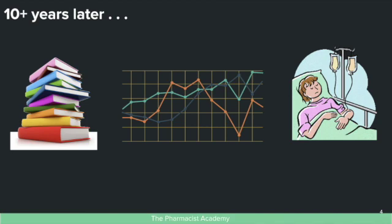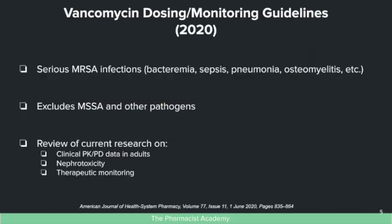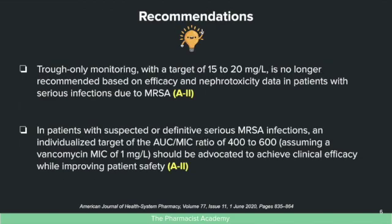Since those guidelines came out, there's been more experience with vancomycin and several publications on therapeutic monitoring and dosing, leading to the 2020 guideline. The 2020 guidelines, similar to 2009, focus on serious MRSA infections such as bacteremia, sepsis, and pneumonia, and exclude MSSA and other pathogens. They reviewed clinical pharmacokinetic and pharmacodynamic data, as well as nephrotoxicity and therapeutic monitoring data.